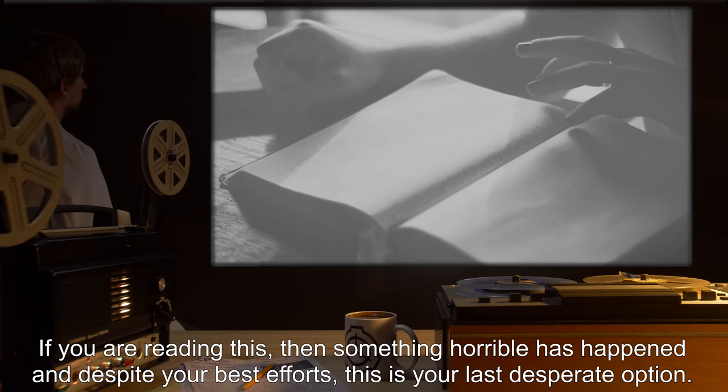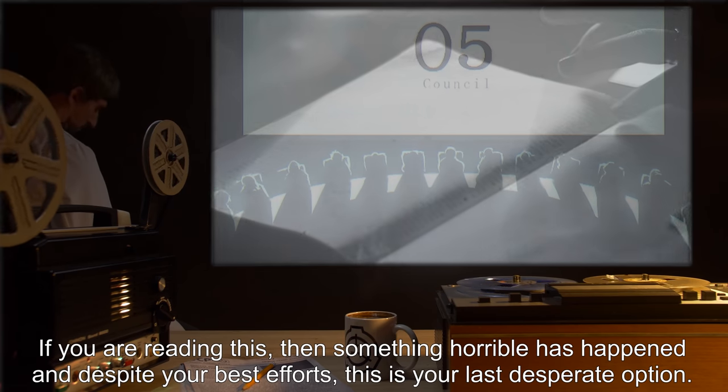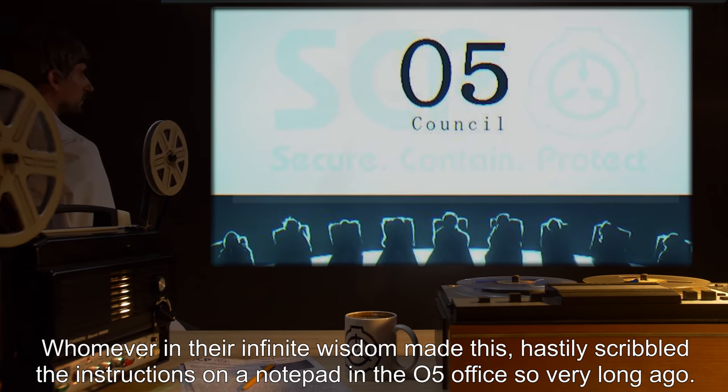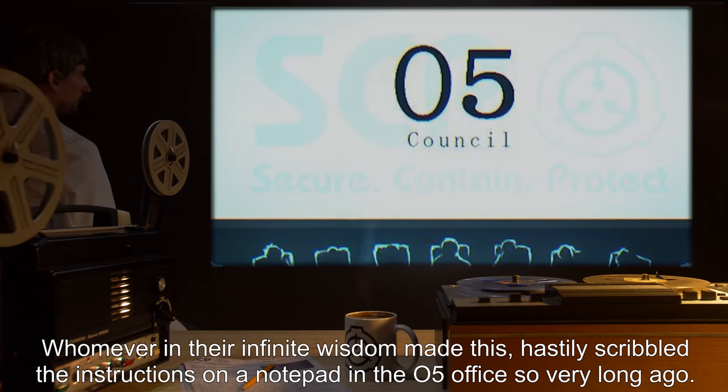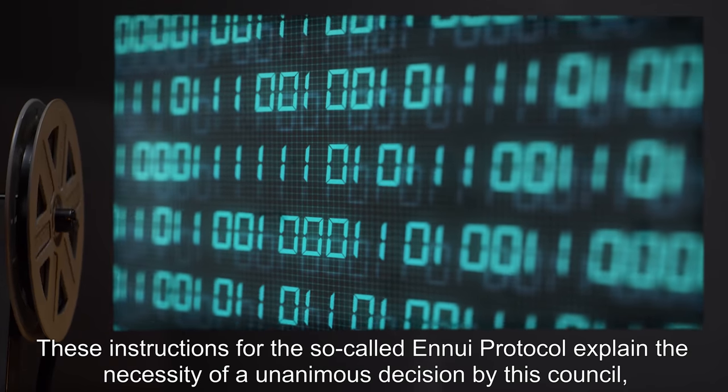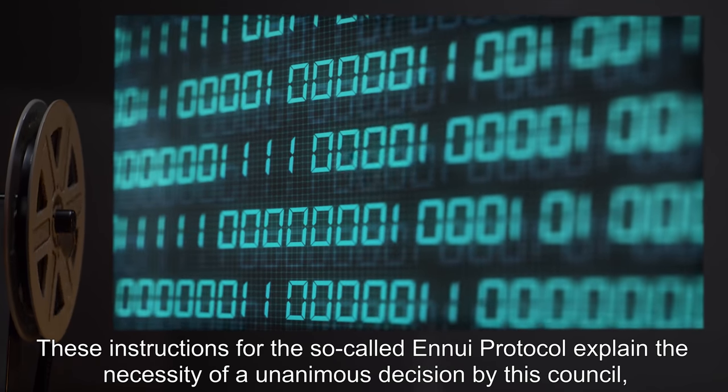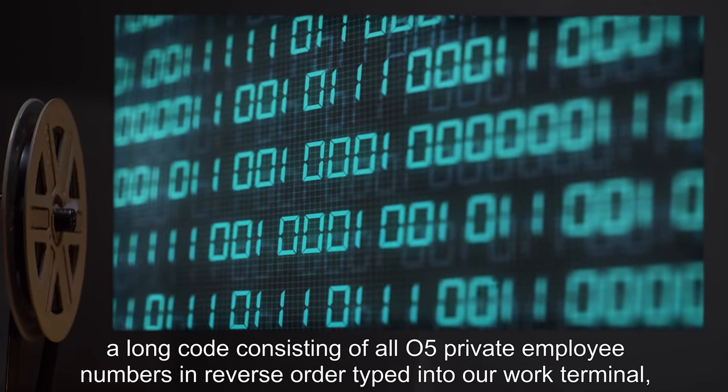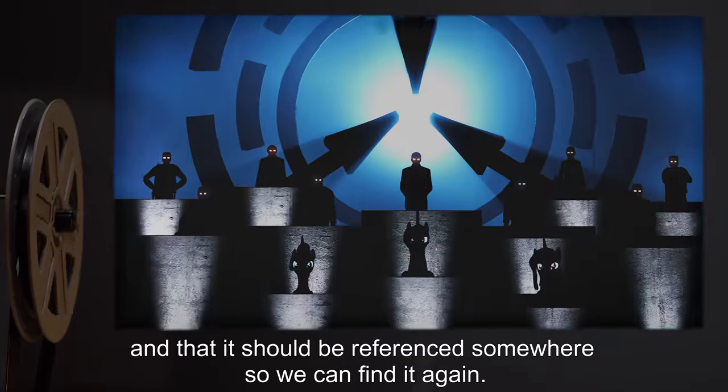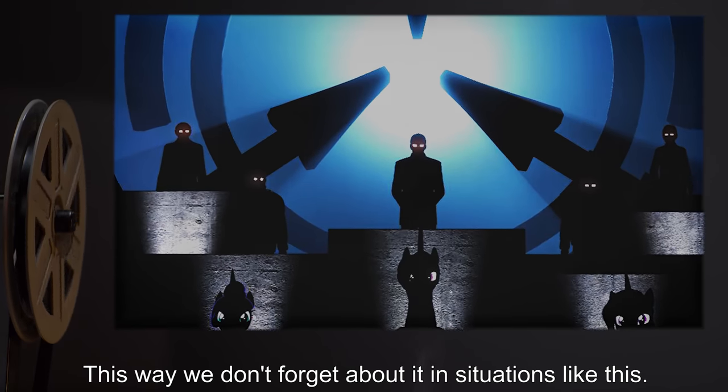If you're reading this, then something horrible has happened, and despite your best efforts, this is your last desperate option. To be honest, there's no way to know what will happen. Whoever in their infinite wisdom made this hastily scribbled the instructions on a notepad in the O5 office so very long ago. These instructions for the so-called OnWay protocol explain the necessity of a unanimous decision by this counsel. A long code consisting of all O5 private employee numbers in reverse order, typed into our work terminal, and that it should be referenced somewhere, so we can find it again. This way, we don't forget about it in situations like this.